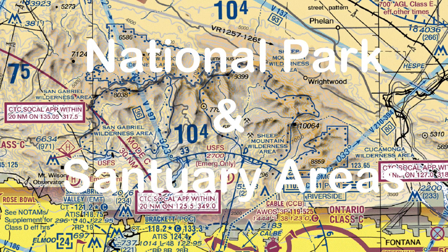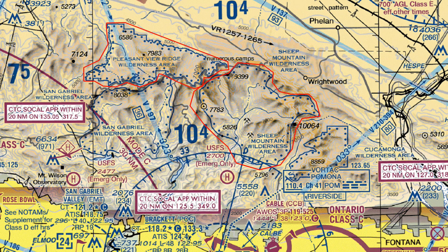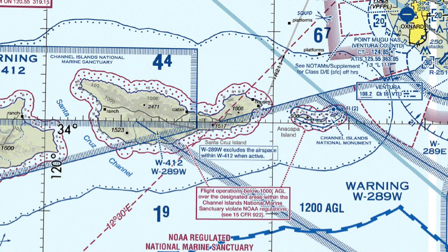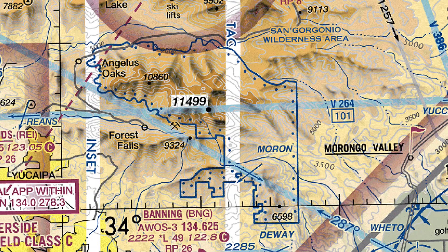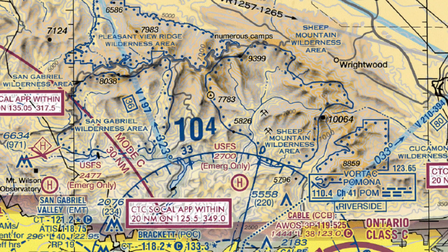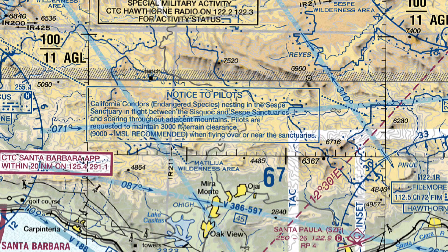Airspace with blue or magenta solid lines with dots indicates national park, forest, or similar areas. Most are indicated in blue, with marine sanctuaries depicted in magenta. All aircraft are requested to maintain at least 2,000 feet above the surface in these areas, except when landing at a designated airport, with permission, or in an emergency. These are not actually FAA rules, but those of the U.S. Fish and Wildlife Service, Forest Service, or the National Park Service. Many will have additional text on the chart noting their restrictions. The primary concern in these areas is noise disturbing wildlife.